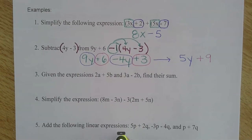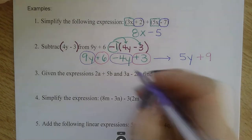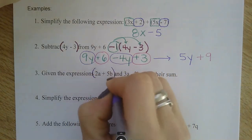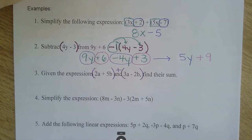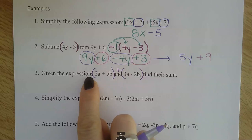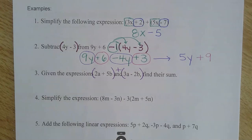Let's keep going to number three. Given the expression 2a plus 5b and 3a minus 2b, find their sum. Sum is telling me to add, so I have this and this and I'm adding them together. Nothing to distribute here, nothing to distribute on this set of parentheses either. So I'm ready to just combine my like terms.